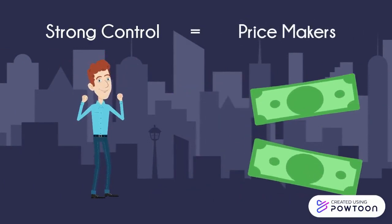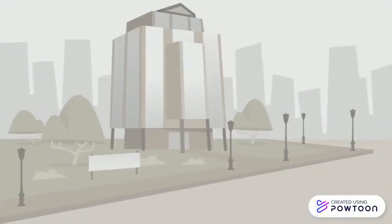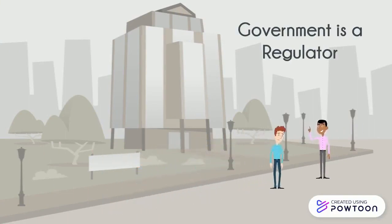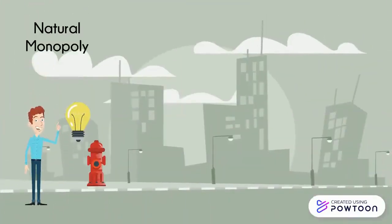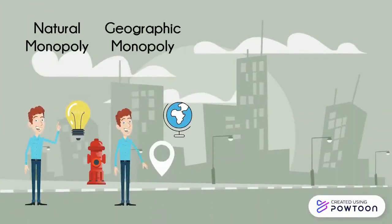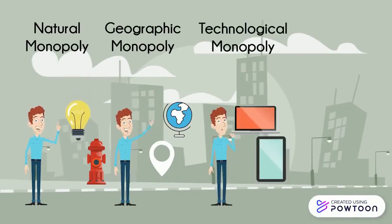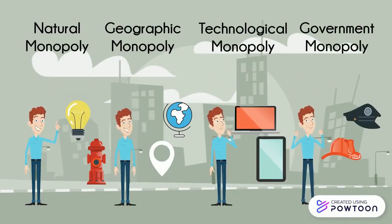When it comes to monopolies, the government has stepped in as a regulator to try and stop this from occurring. However, there are four different legal types of monopolies that occur. There are natural monopolies, such as electric or utility companies. There are geographic monopolies, based on location. There are technological monopolies, due to patents. There are also government monopolies, which are businesses controlled by the government.